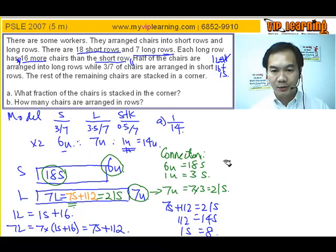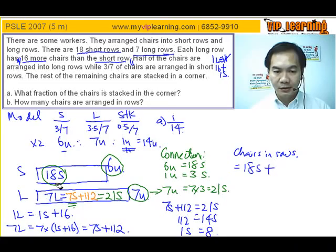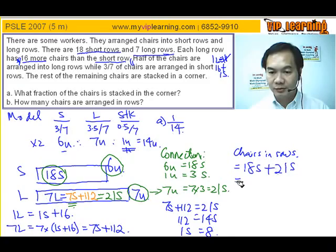Now what are they asking for? How many chairs arranged in rows? Total chairs arranged in rows is actually how many chairs? We have 18 short rows here plus over here converted to become 21 short rows.